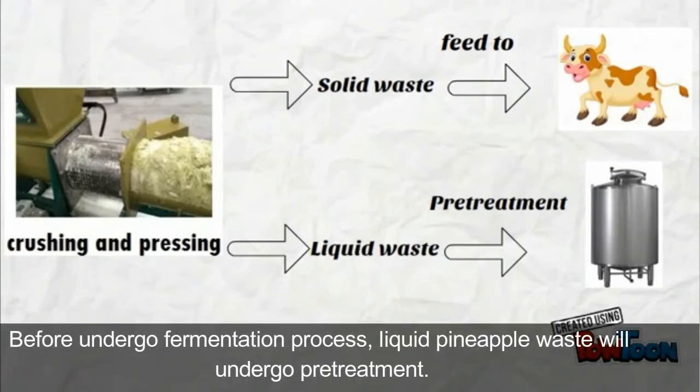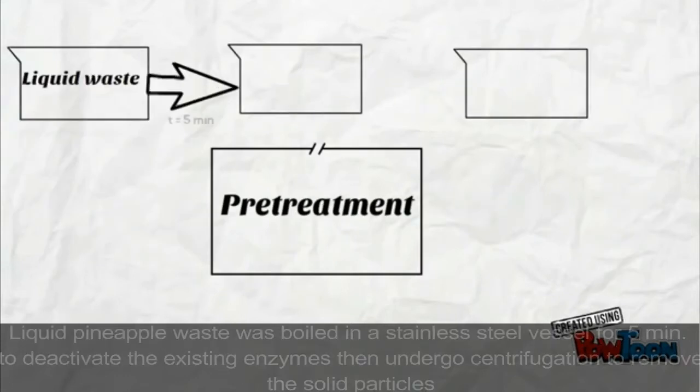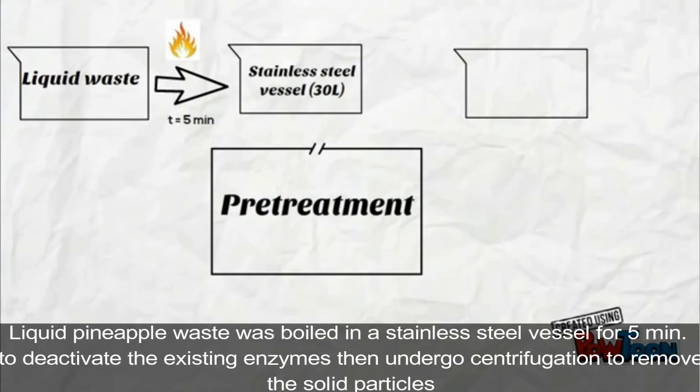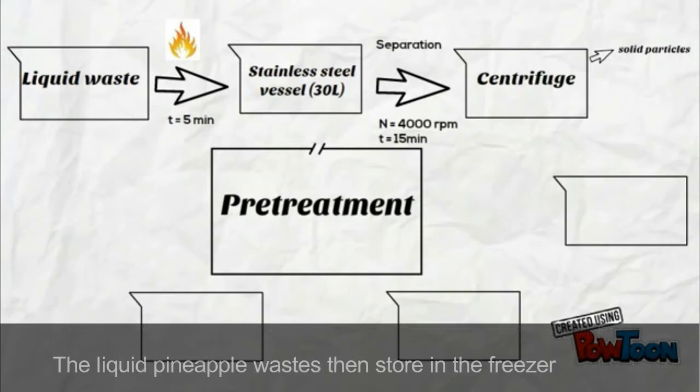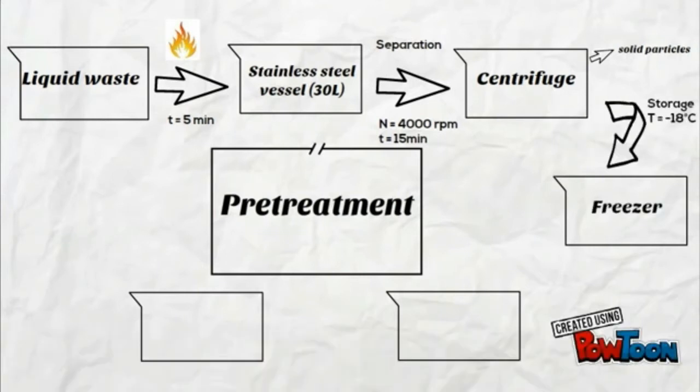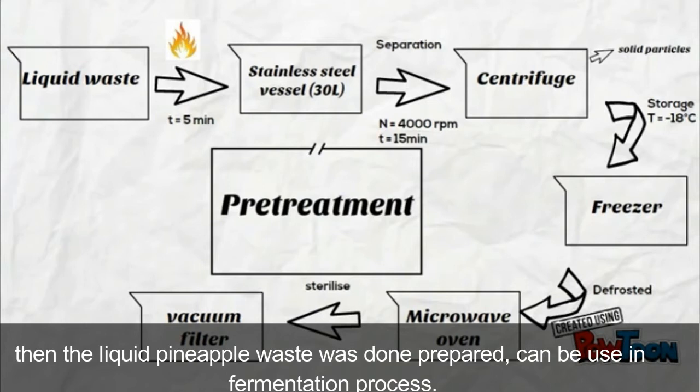Before undergoing fermentation process, liquid pineapple waste will undergo pretreatment. Liquid pineapple waste is boiled in a stainless steel vessel for 5 minutes to deactivate the existing enzymes, then undergoes centrifugation to remove solid particles. The liquid pineapple waste is then stored in the freezer. When we need it, we defrost it by using microwave oven, then sterilize it by using vacuum filter. Then the liquid pineapple waste is done prepared and can be used in fermentation process.